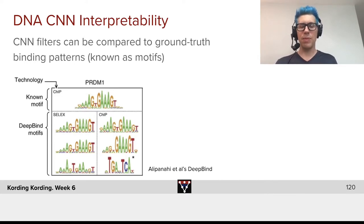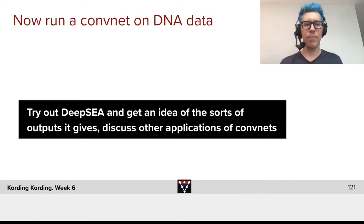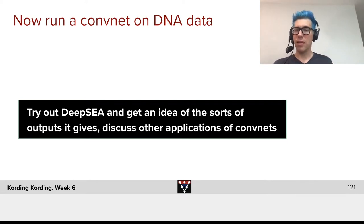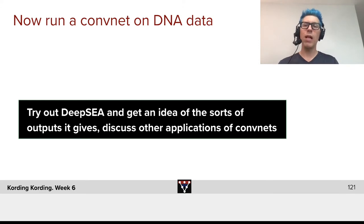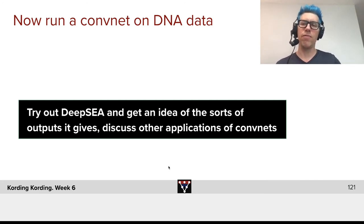We know some aspects about the biology, and we can ask whether our network filters that out. We can encode how important something is by the size of the character — you can see the A's, the G's, and the T's, which happen to be small in that case. I want you to play a little bit with this — not because I want you to solve DNA problems in the future, but rather to see how convNets can be important well beyond the domains computer scientists usually use them in, and can have broad applicability to just every aspect of human life. Try out DeepSea and get an idea of the outputs it produces, and discuss what other applications of convNets you could envision.